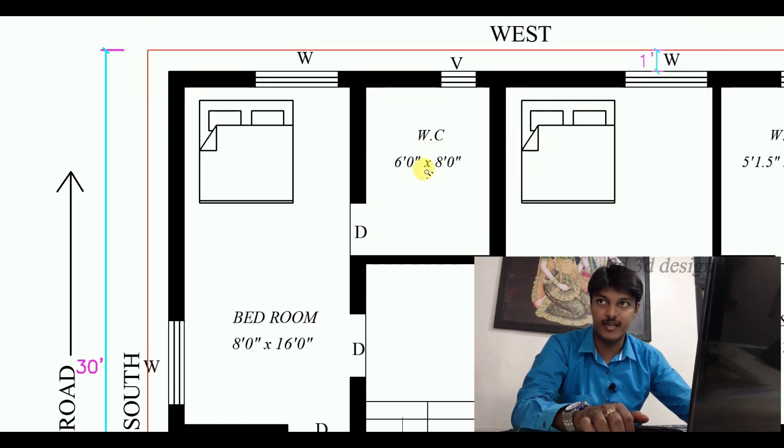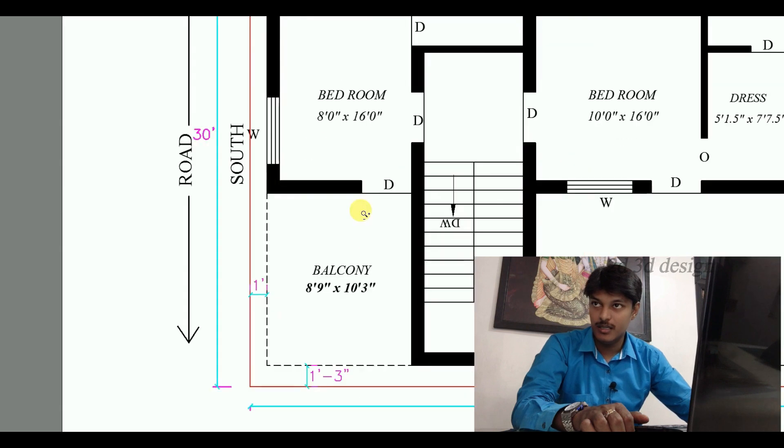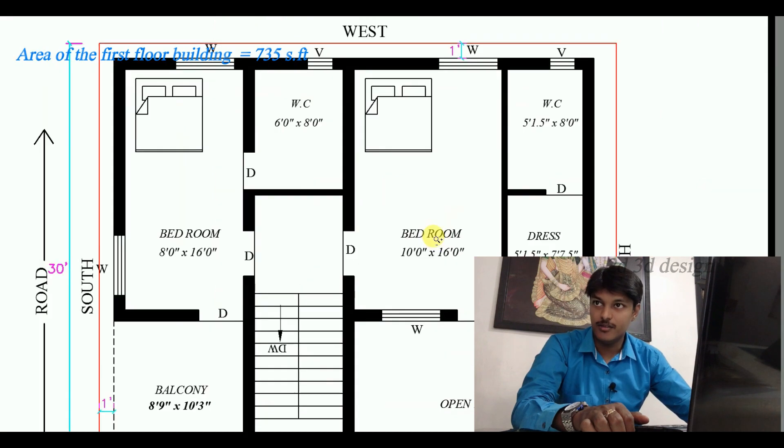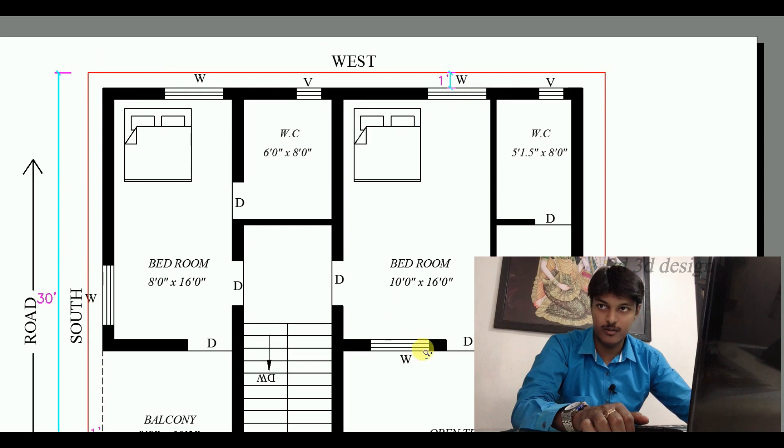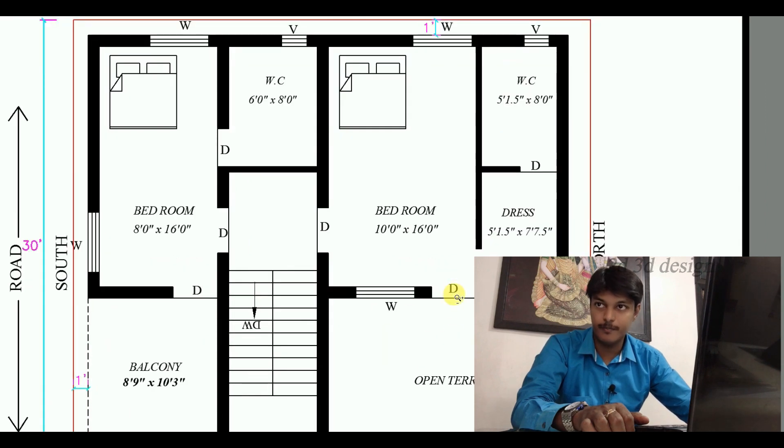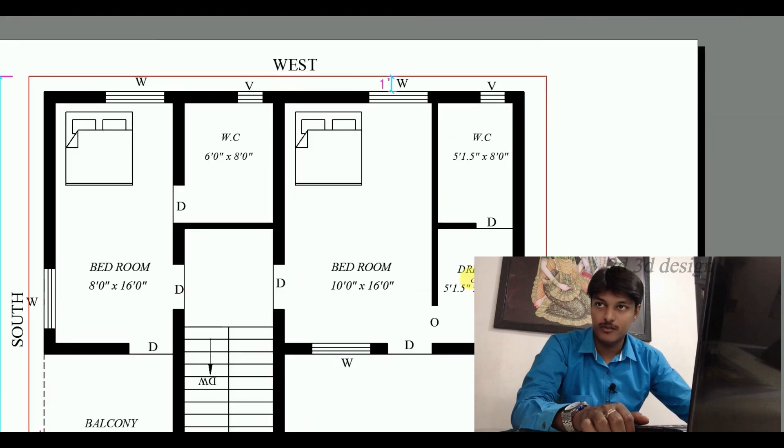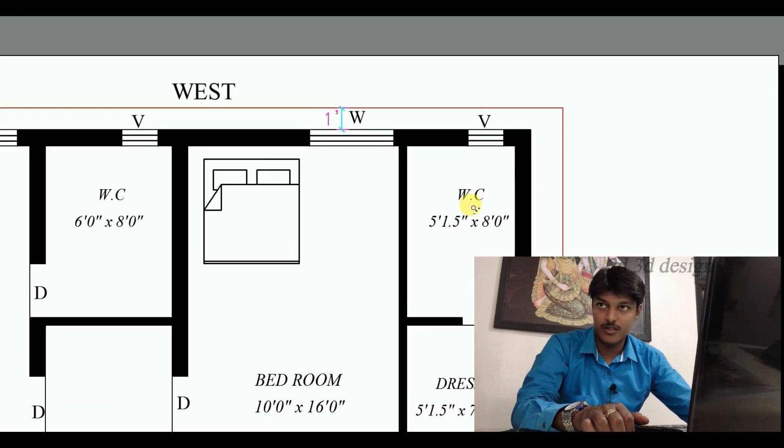This is the third bedroom. The size is 10 feet into 16 feet. This is the outside door. This is the dressing. The size is 5 feet 1.5 inches into 7 feet 7.5 inches.